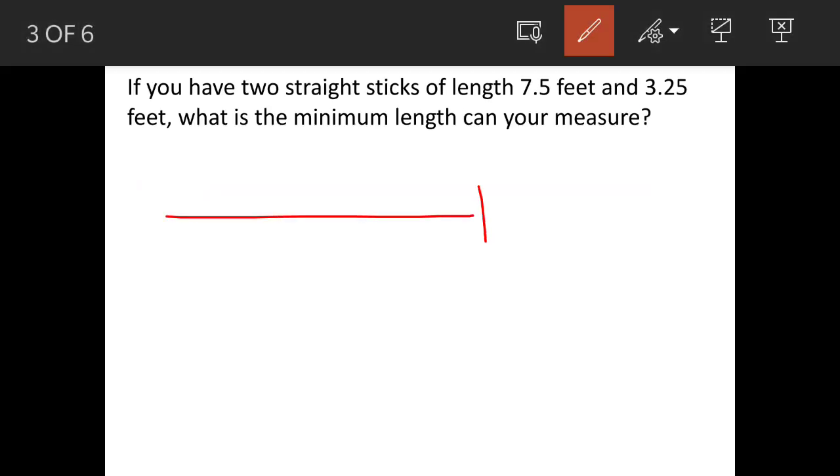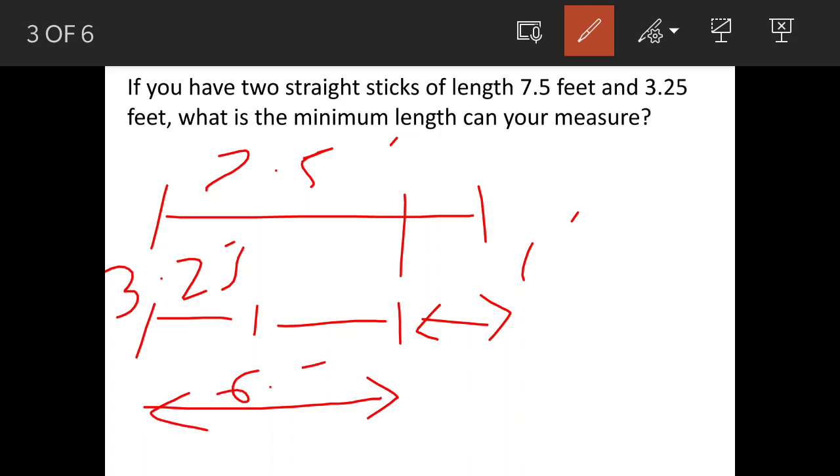The first stick is 7.5 feet and the second stick is 3.25 feet. We'll mark this stick twice on this bigger stick. So what is left? 3.25 and 3.25, this becomes total 6.5, so the balance is 1 feet.